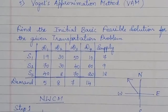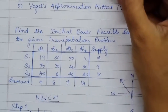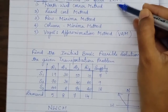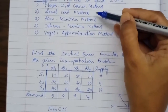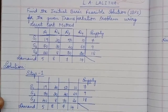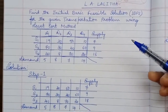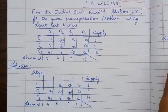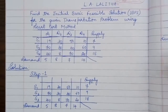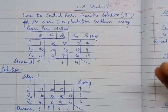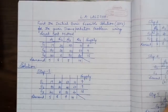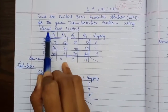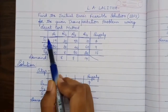In today's class we are going to learn the second method — the least cost method — that is, finding the initial basic feasible solution for the given transportation problem using the least cost method. I am considering the same problem so that we can compare solutions and conclude which is the best method to use.